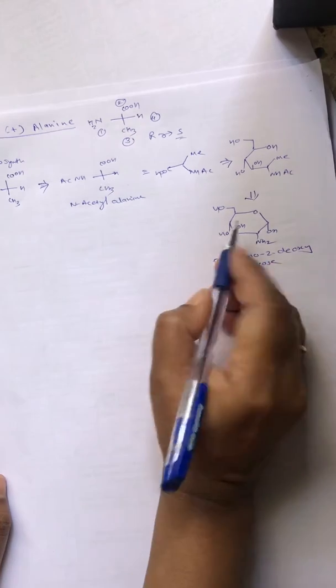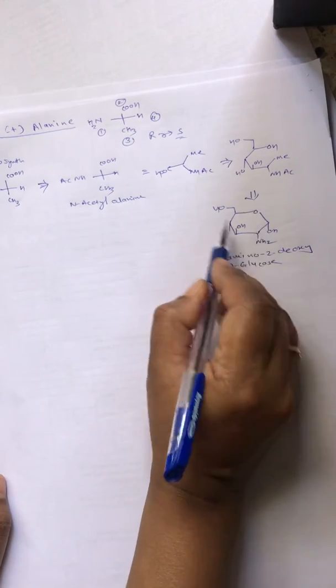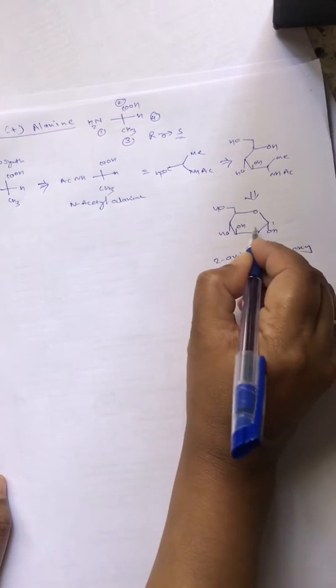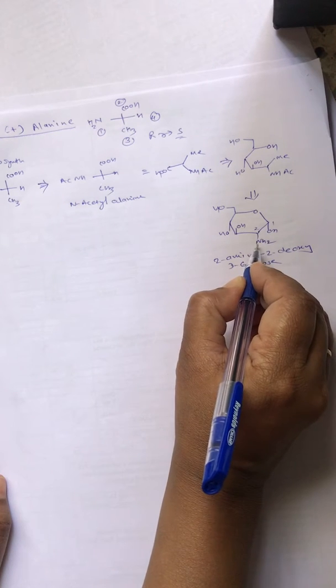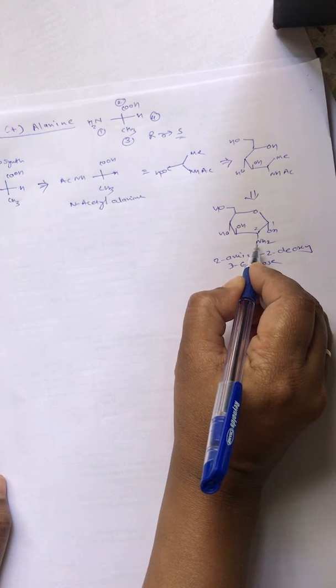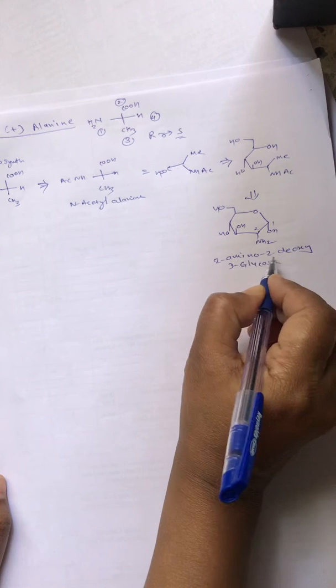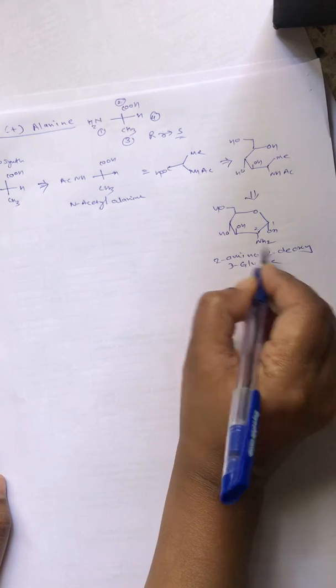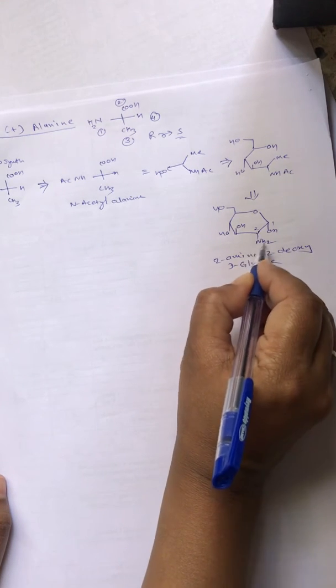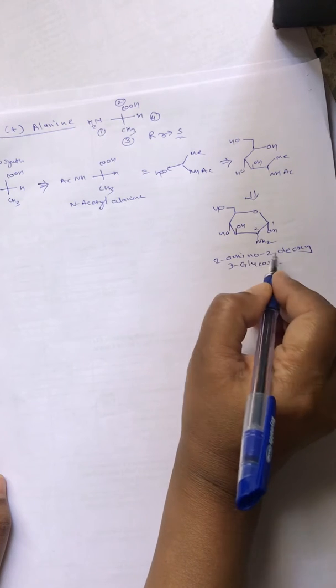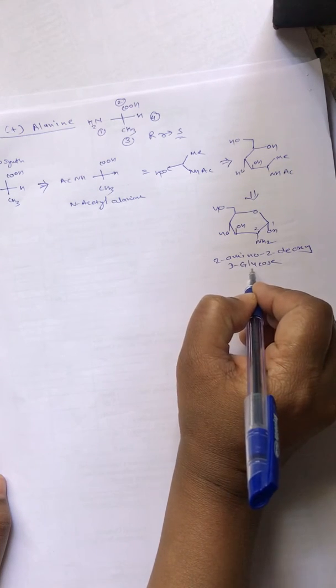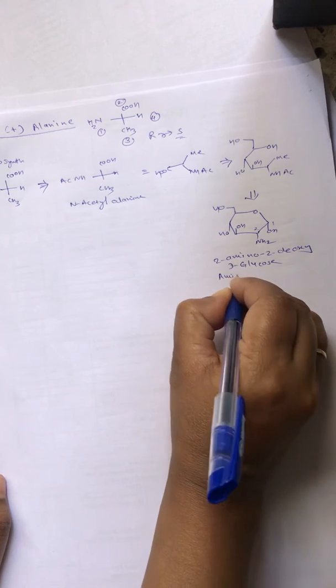If you look at the structure, this is the 6-membered ring of D-glucose where at position 2, NH2 is present instead of OH. Therefore, this is called 2-amino-2-deoxy-D-glucose. This is an amino sugar.